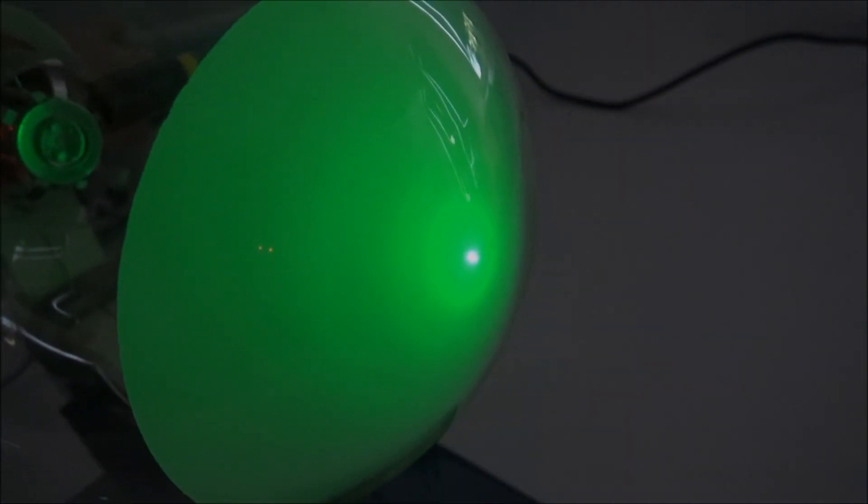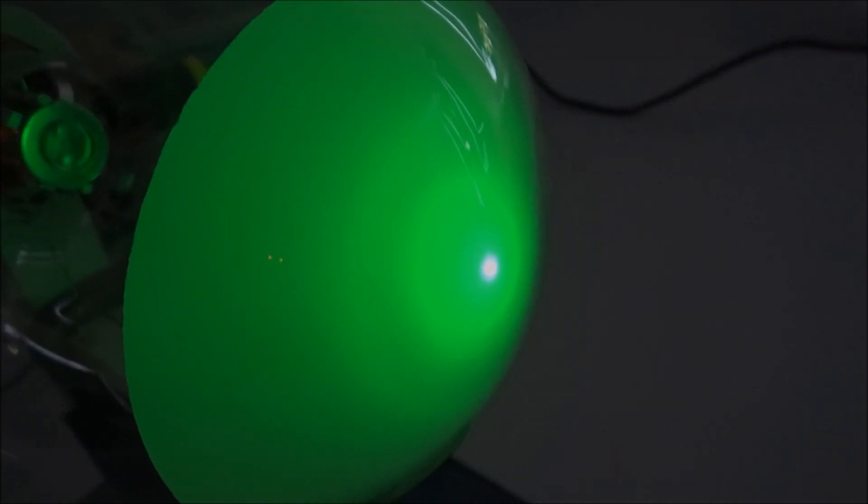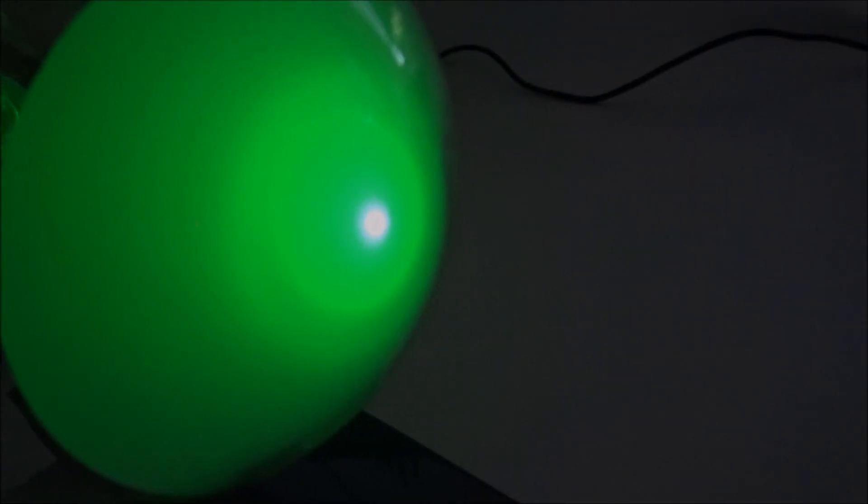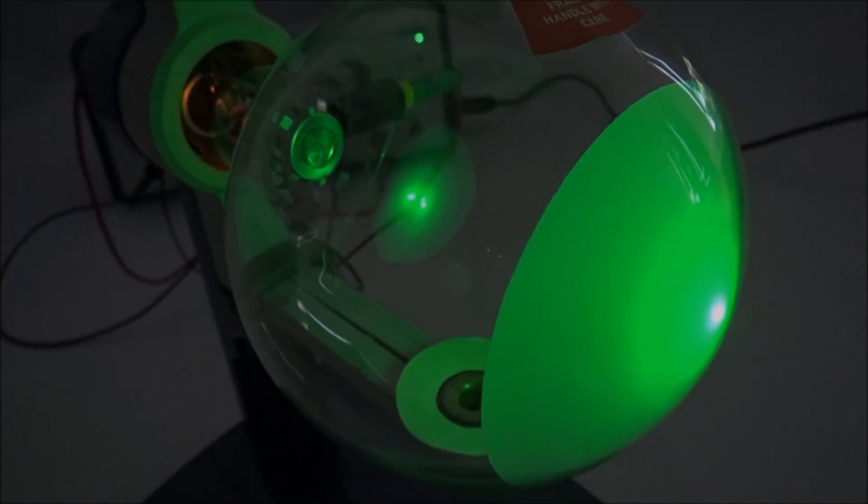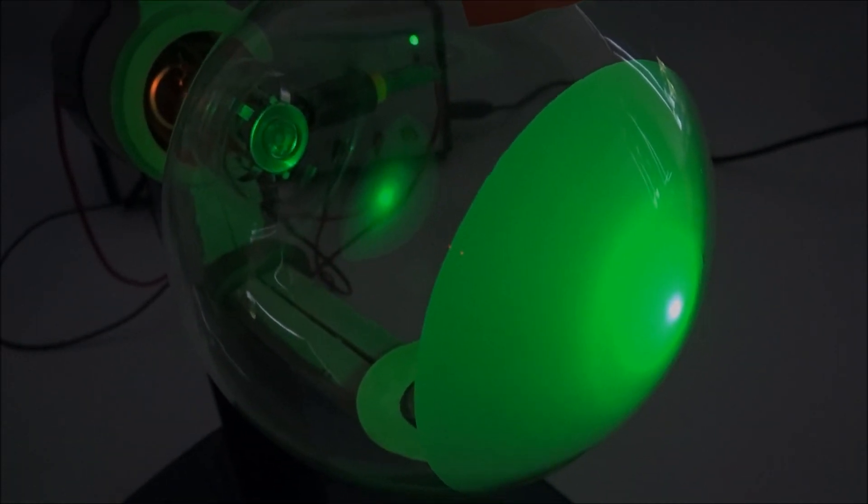And what we see on the screen are these concentric circles, and these concentric circles are the diffraction pattern caused by the electrons moving through the graphite and being deflected. So this is a really nice example of showing this wave-particle duality.